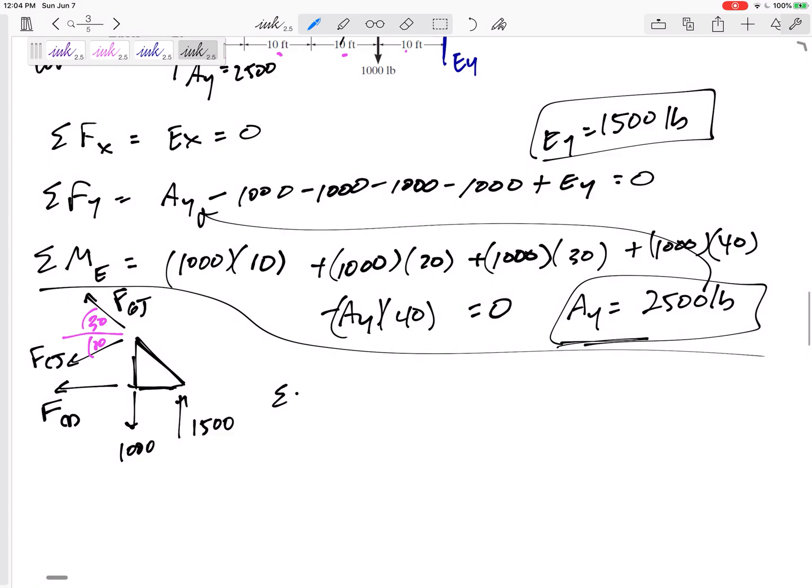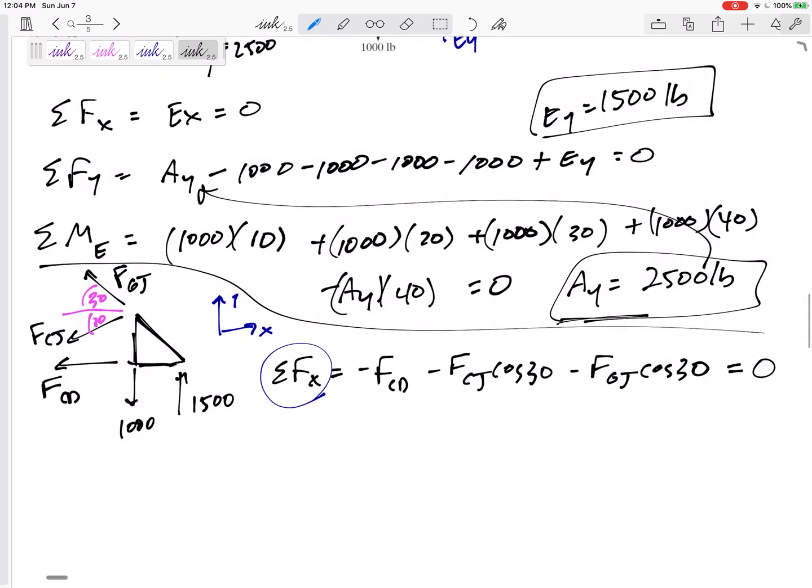Now I think I'm ready to sum the forces in X equals zero, sum the forces in Y equals zero. Sum of the forces in X. Negative FCD and all of that is in the X. Negative FCJ but the cosine 30. And same thing, negative FGJ cosine 30. That negative doesn't mean compression or tension. That negative just means left, right? Now when you're summing the forces, sum your forces according to your axes. You can define your own axes, that's fine. But sum the forces according to those axes and stay consistent. That equals zero.